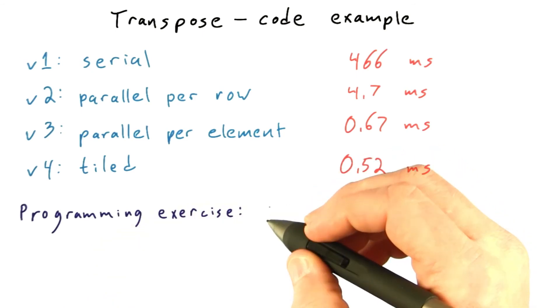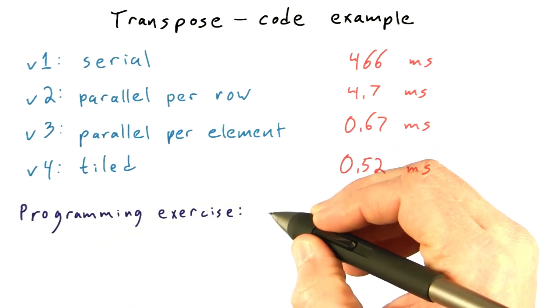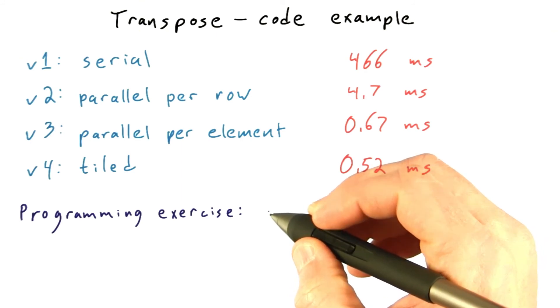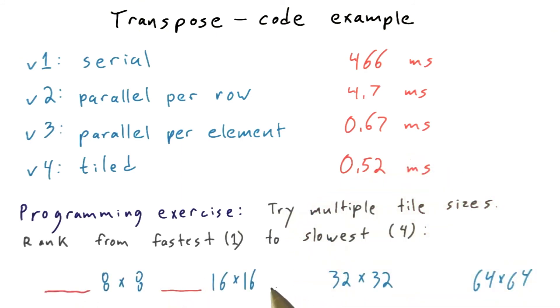Here's a programming exercise. Go back to the transpose code and try a few different tile sizes to see which ones work best. Try 8 by 8, 16 by 16, 32 by 32, and 64 by 64 tiles. This last one will be trickier because this is more elements than you can put threads in a thread block, so you'll have to think about how to pack this into a single thread block.